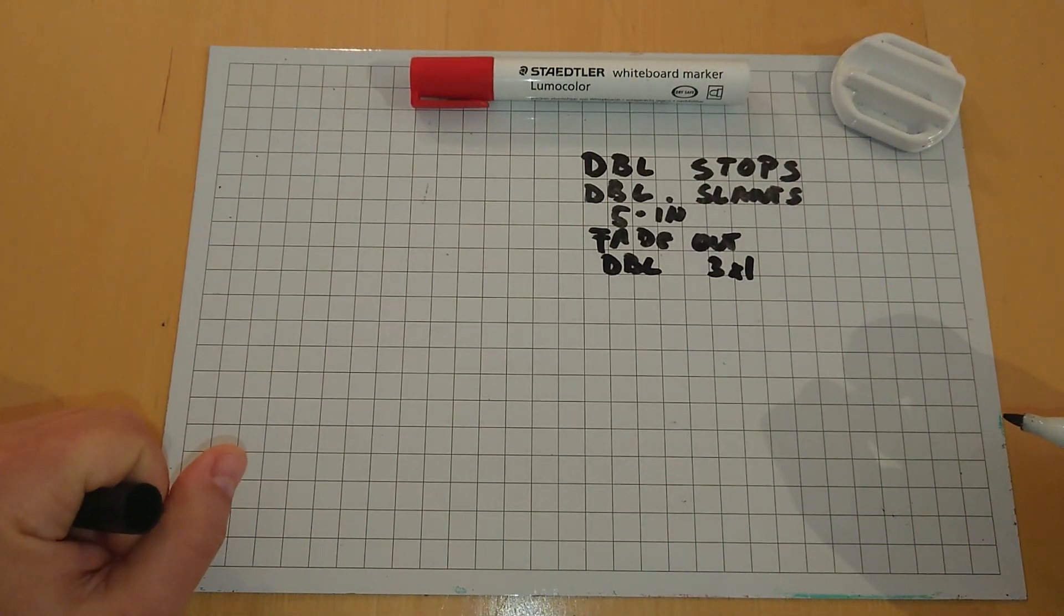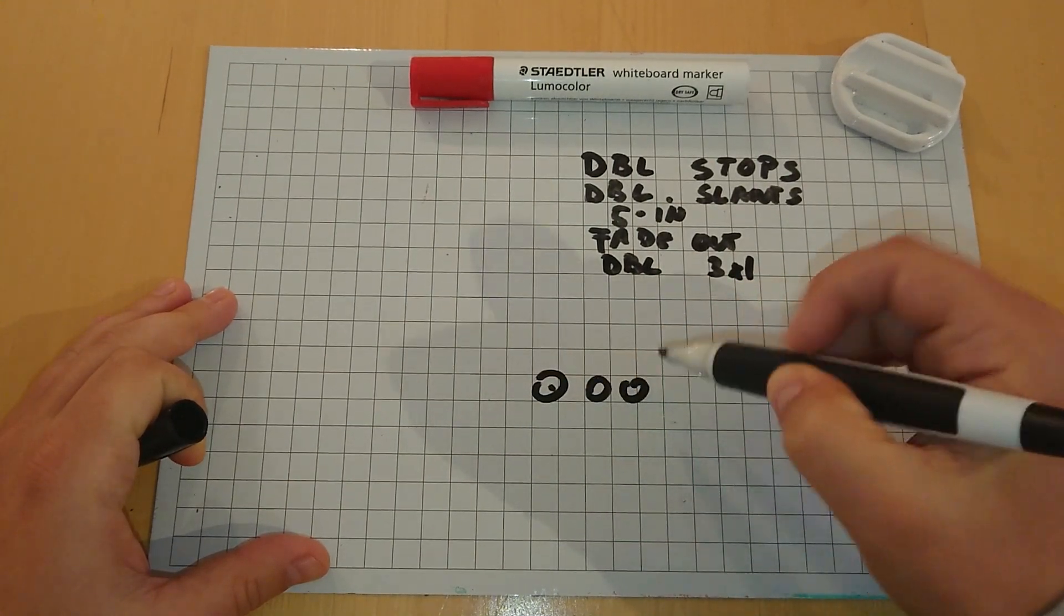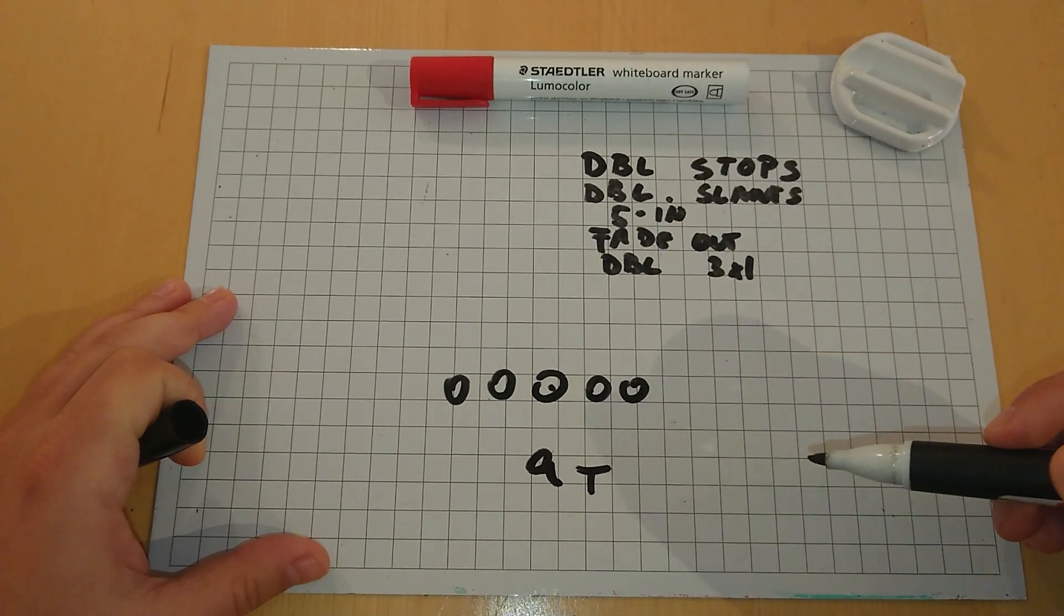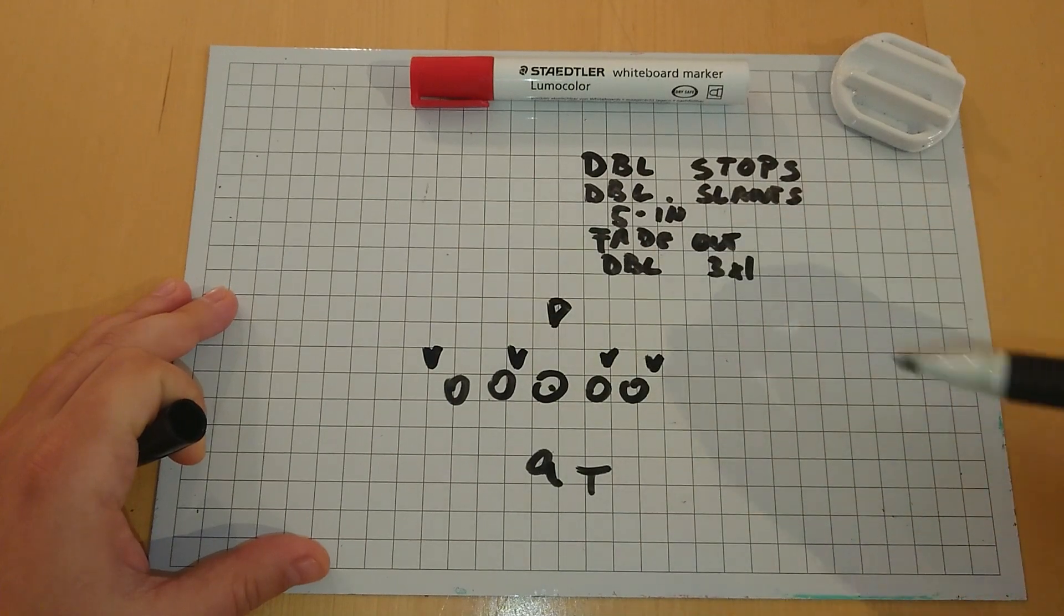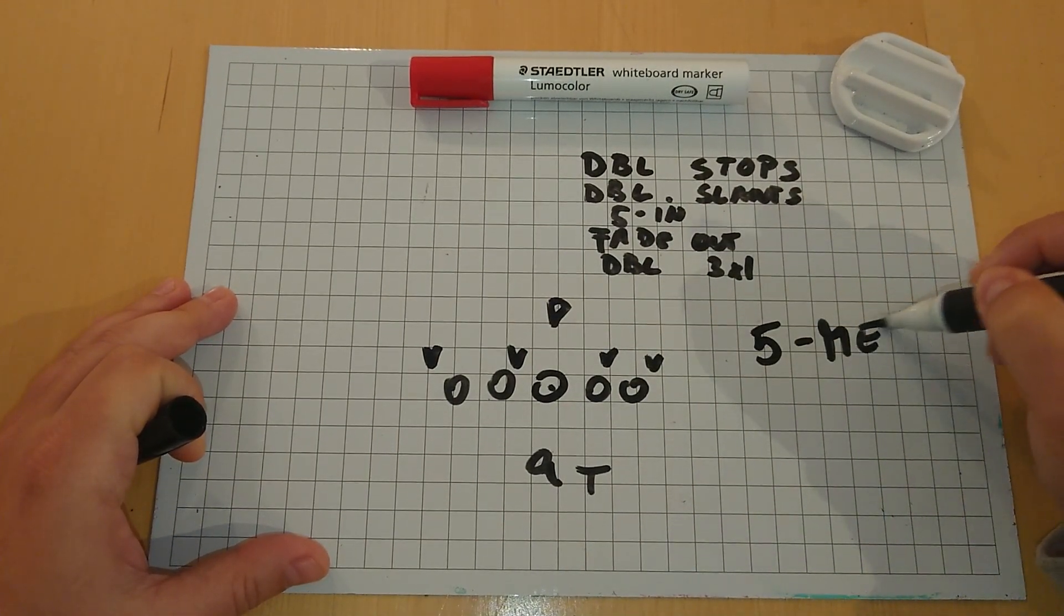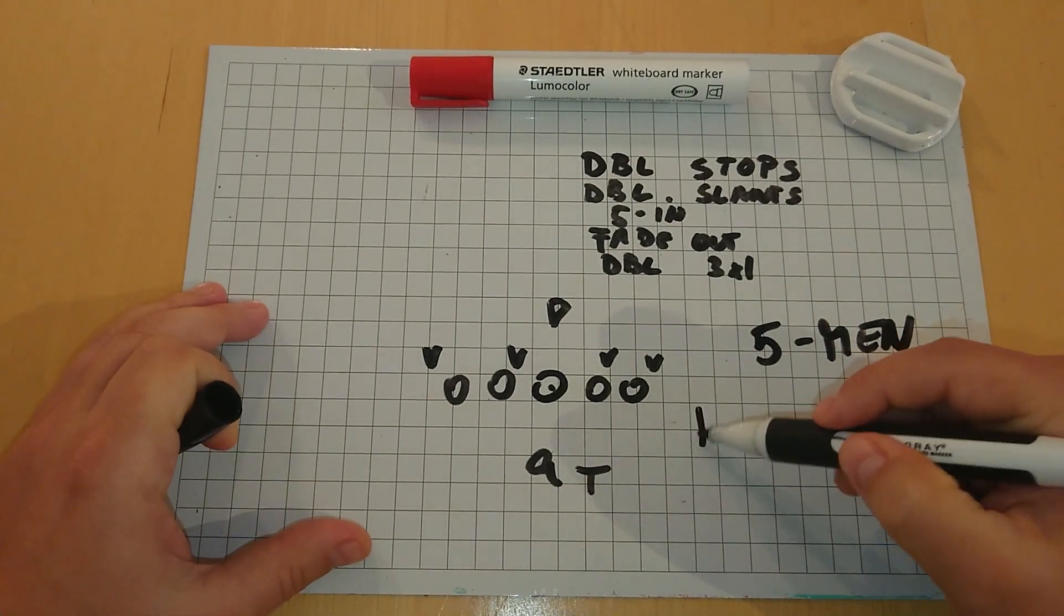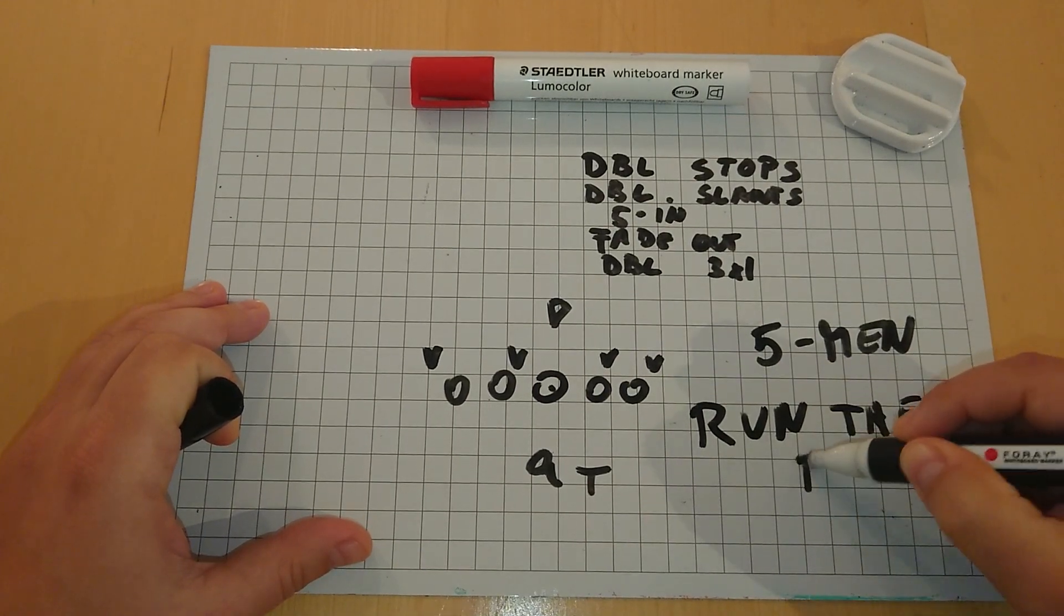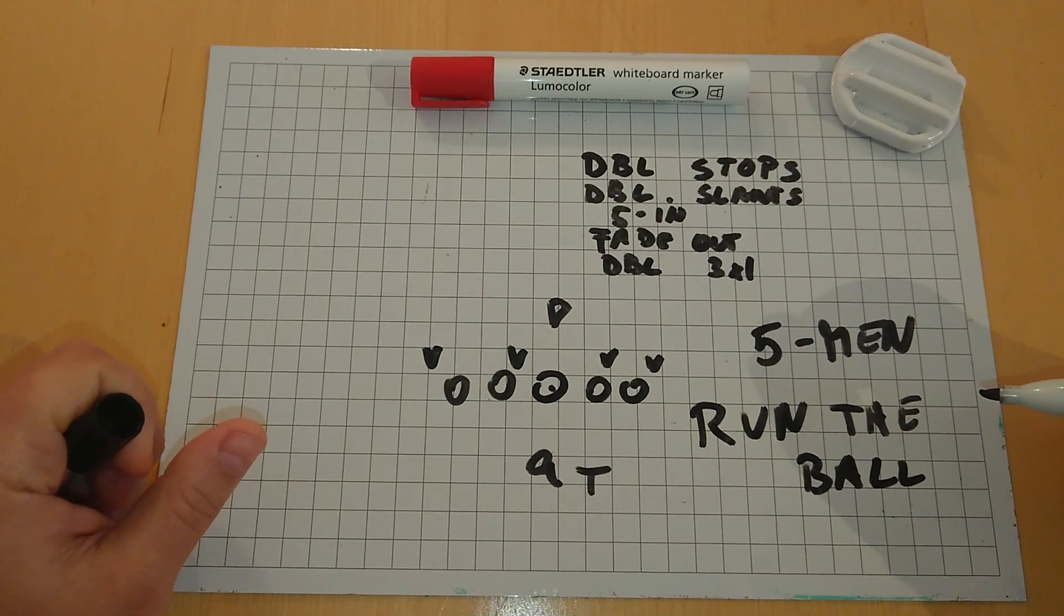First I really want to say that when we talk about take what the defense gives you and we're looking at a spread formation, we have to understand that when we get this box, this is a five-man box. Taking what the defense gives you means running the ball, but for our teaching and talk now about quick game.